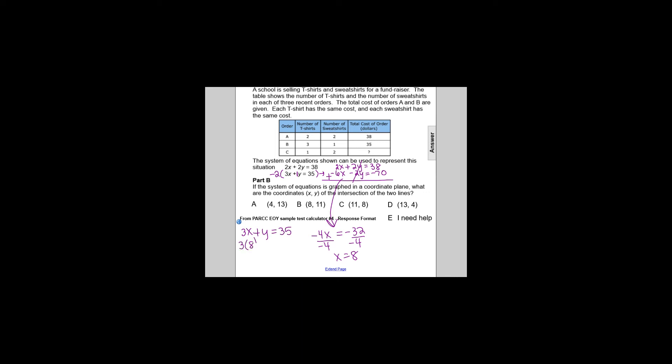So now it's 3 times 8 plus y equals 35. 3 times 8 is 24, and then we'll subtract 24 on both sides to get that y equals 11. So if x equals 8 and y equals 11,